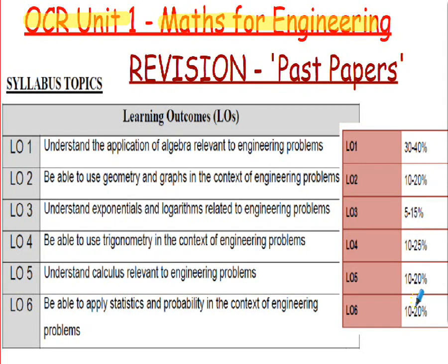You can see the kind of percentages for the different learning outcomes. By far the chunkiest one — around 30 to 40 percent — is learning outcome one, which is the algebra outcome. We spent nearly a third of the academic year on that outcome alone. Outcome two was basically graphs: drawing, reading, and using them. Outcome three covered exponentials and logarithms — there will always be questions on those functions.